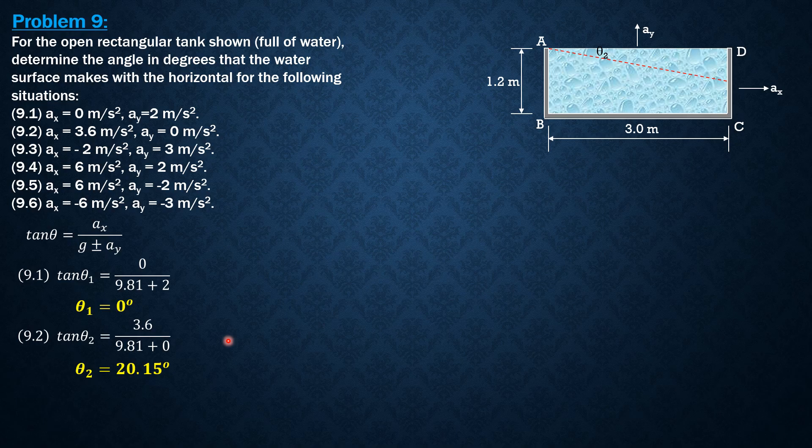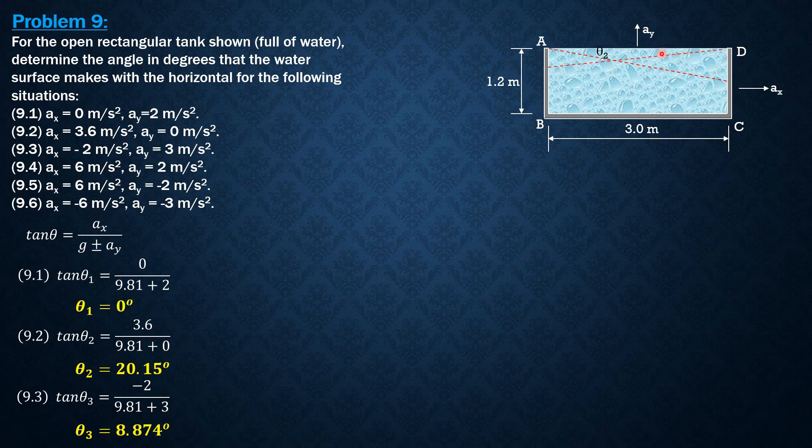Then 9.3, tangent theta 3 is negative 2 over 9.81 plus 3. But we'll just make in your calculation positive 2 over 9.81 plus 3, and we will just reverse the slope. So it should be sloping down to the left. And it is 8.874 as shown in the figure. So this is theta 3 down to the left. So it's just like the acceleration ax is going to the left, so the slope is in that direction of the surface.